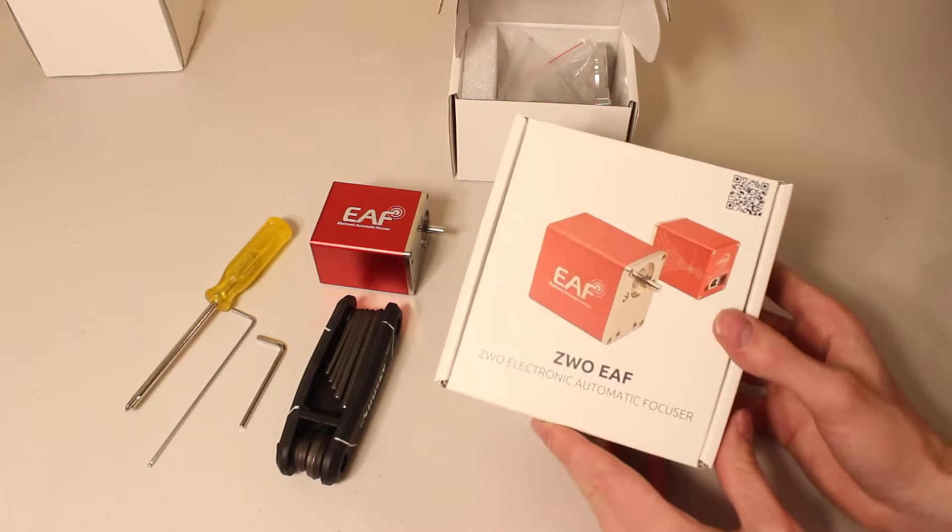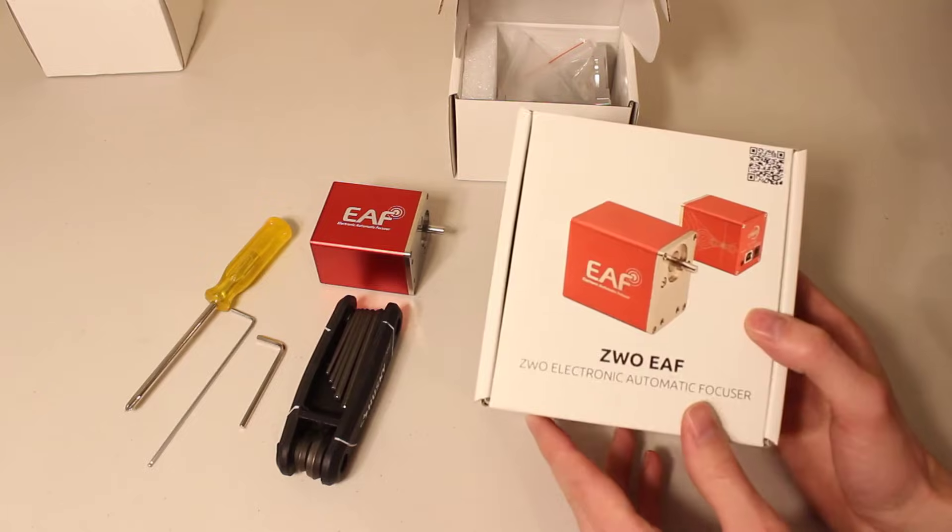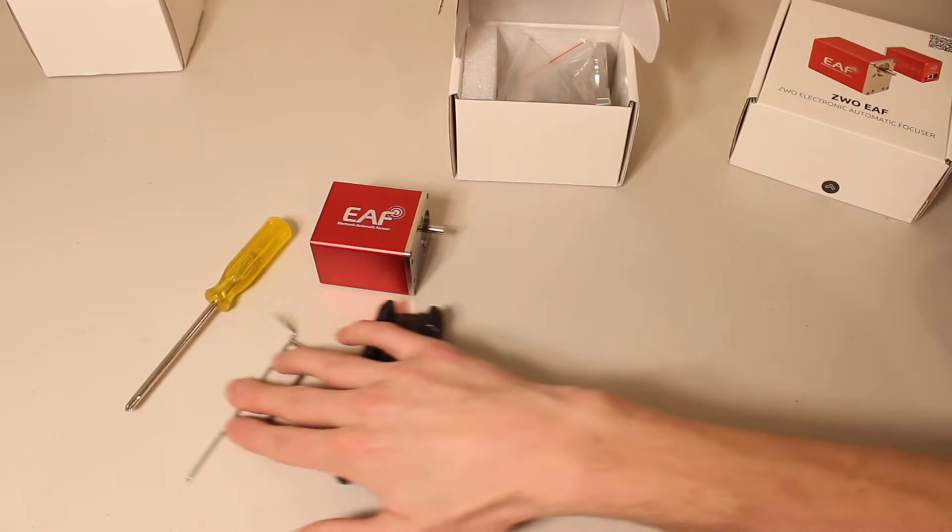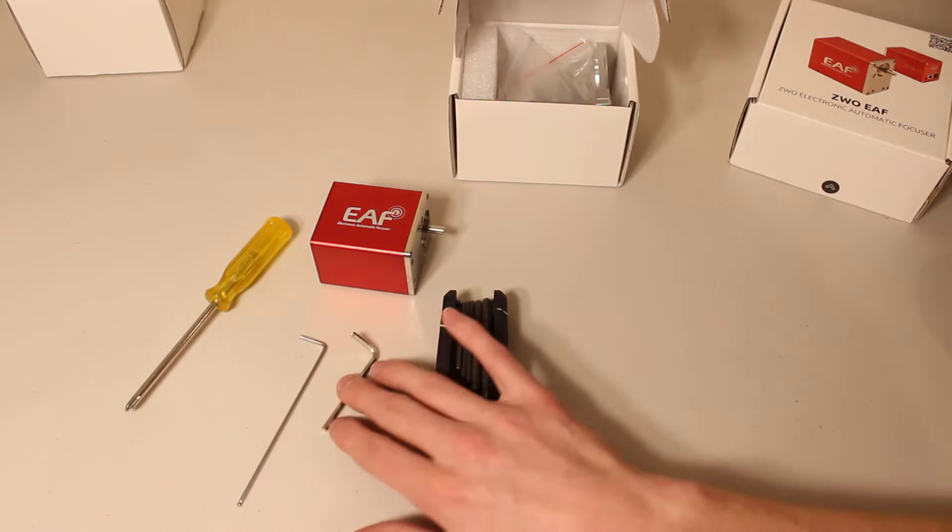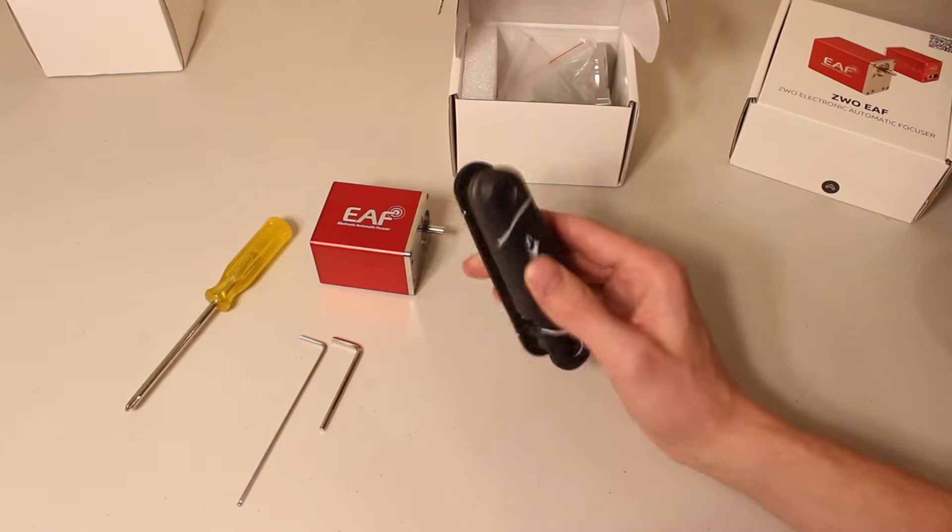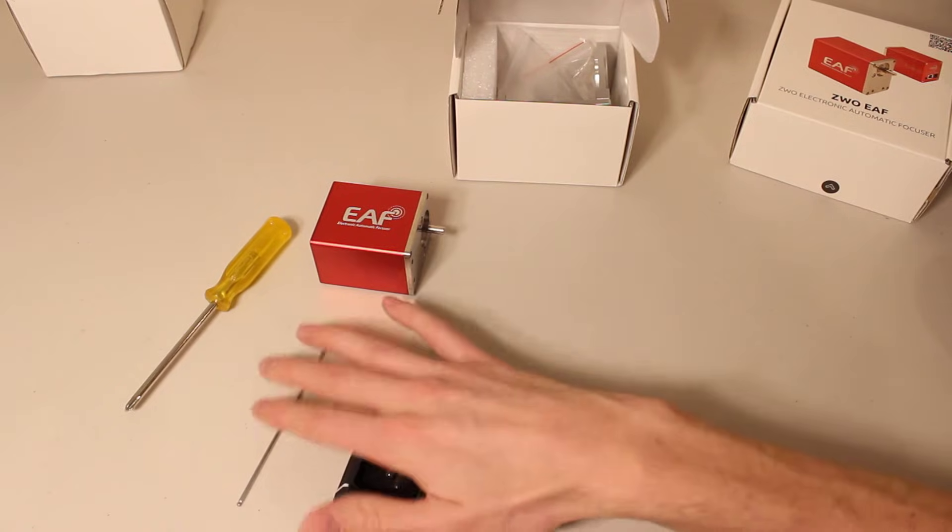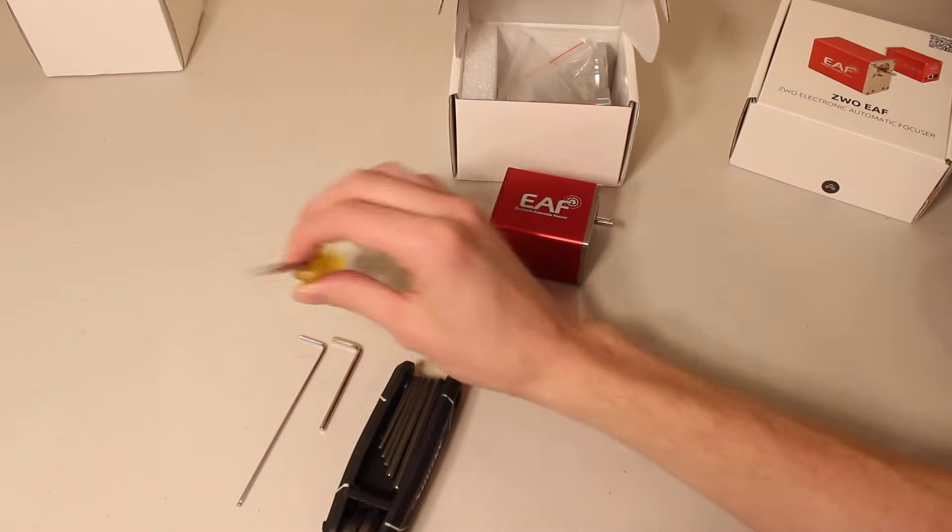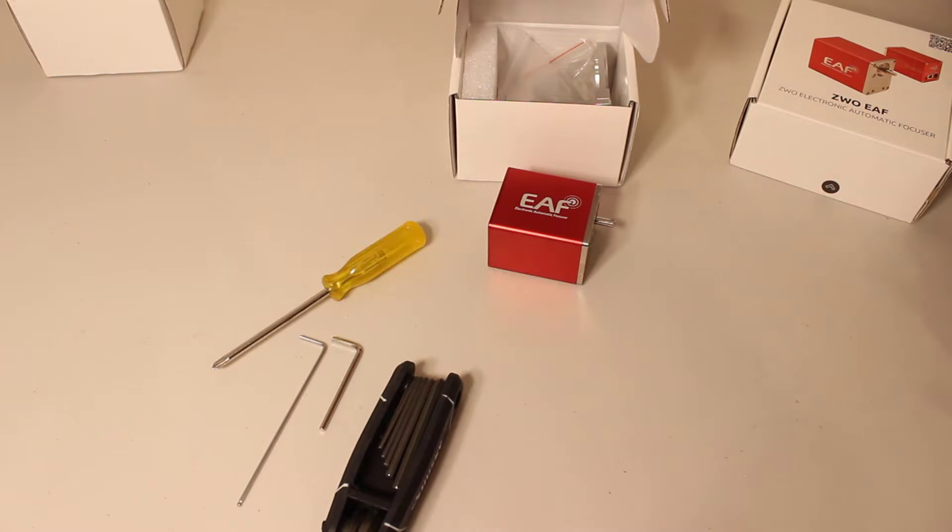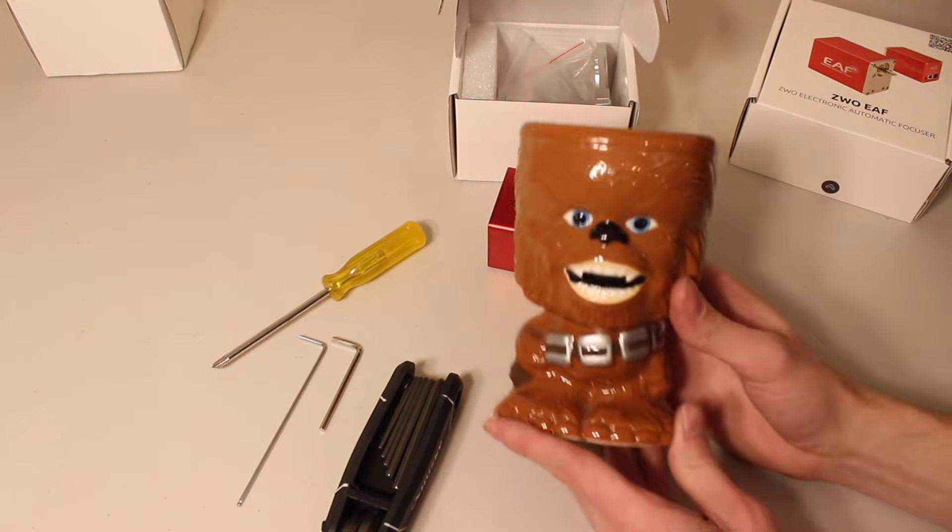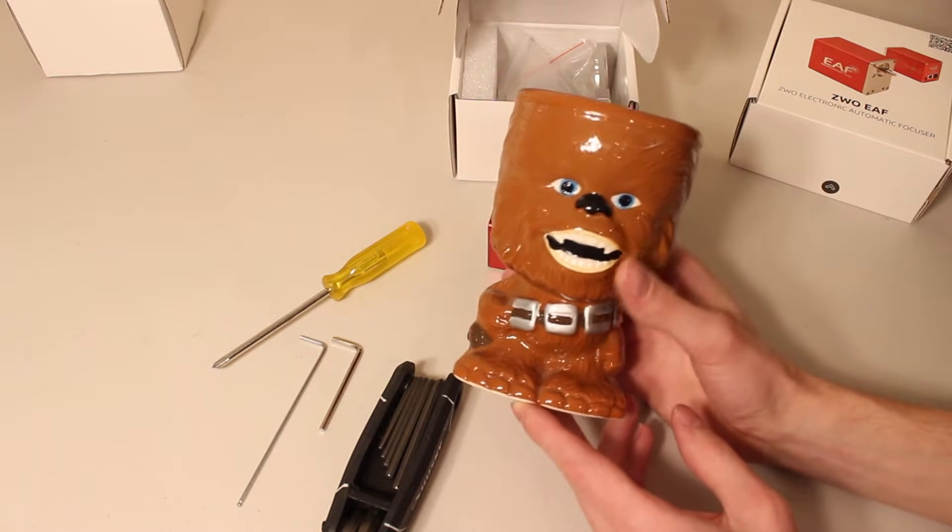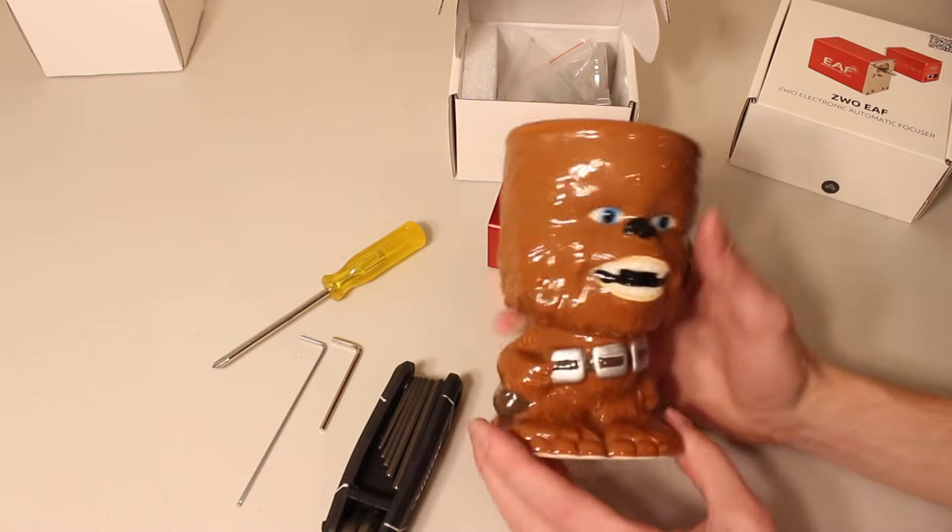You actually don't need anything from the original ZWO EAF box, unless you don't have a basic set of tools. These two Allen wrenches come with the EAF. If you have just a standard metric set, this will work too. And then you're going to need a standard Phillips head screwdriver. And last but not least, I use a Chewbacca mug for storing my screws so I don't lose them.